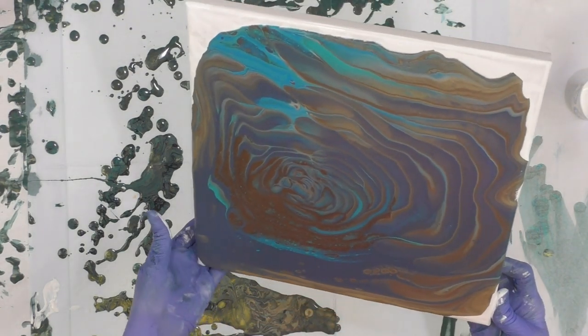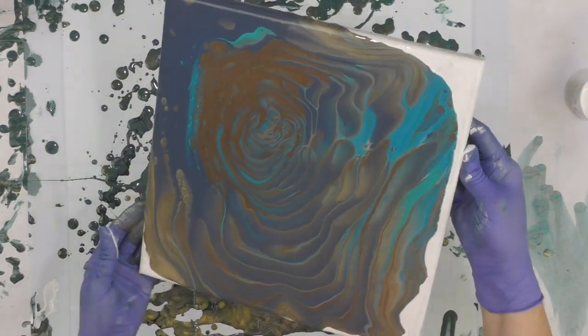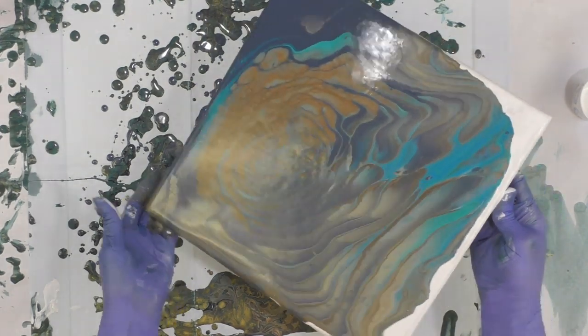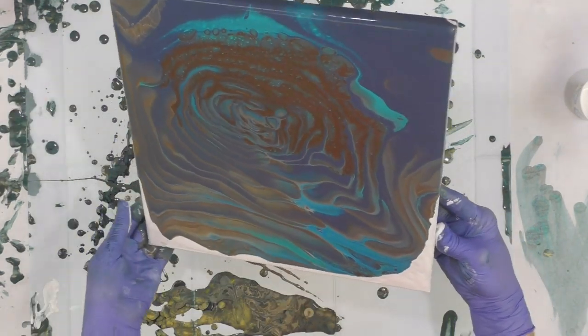When I added that little bit of white to the Payne's gray, it makes it almost like a denim blue. So if you ever want to make a denim blue, just add some white to Payne's gray and you've got yourself a great dusky denim blue.